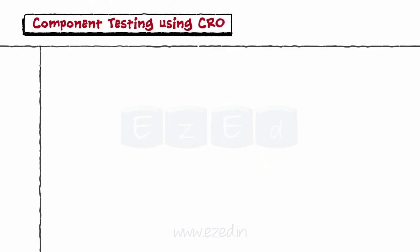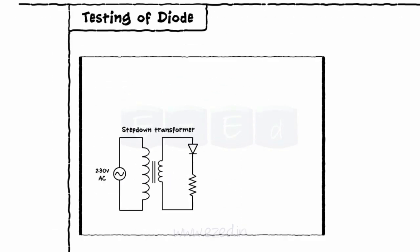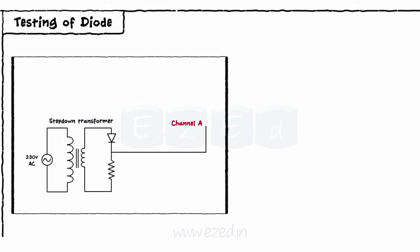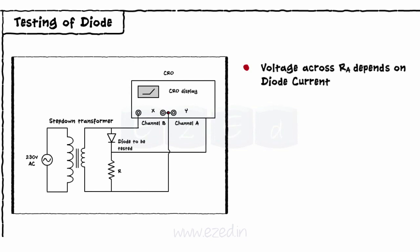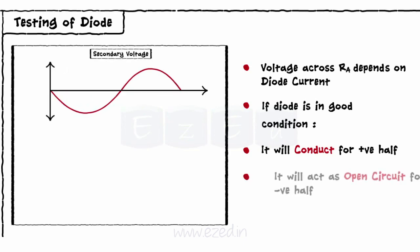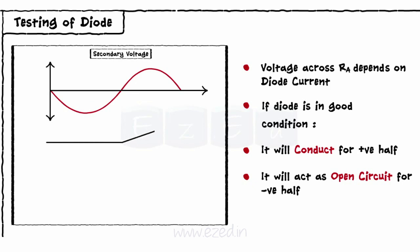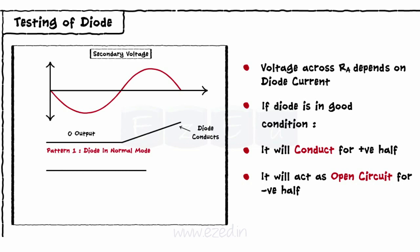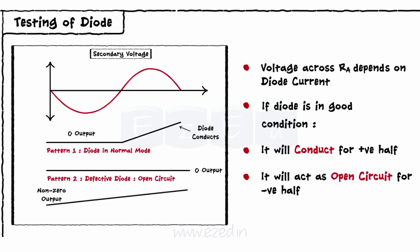Let's study the use of a CRO for component testing. We will only see the testing of a diode. A diode is connected in series with a resistor. The voltage across the resistor is connected to channel A, which acts as an output as it is dependent on the diode current. The input applied to the transformer is an AC voltage. If the diode is in good condition, it will conduct for the positive half of the secondary voltage and act as an open circuit for the negative half. If the diode is open, that is, faulty, it will never conduct and we will not get any output. If the diode is faulty and acts as a short circuit, then we will get a non-zero output for the negative cycle of secondary voltage as well.